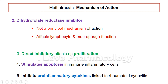The inhibition of dihydrofolate reductase (DHFR) forms a minor mechanism — it is not the principal mechanism of action. Through DHFR inhibition, methotrexate affects lymphocyte as well as macrophage function. Additional effects include direct inhibition of inflammatory cell proliferation, stimulation of apoptosis in immune-inflammatory cells, and inhibition of pro-inflammatory cytokines linked to mediating rheumatoid synovitis.